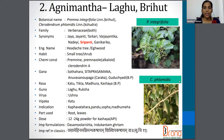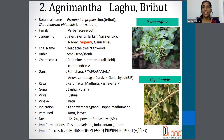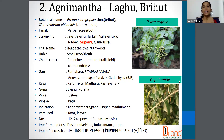The next drug is Agnimanda. Brihat Agnimanda botanical name is Premna integrifolia, and Laghu Agnimanda or Kshudra Agnimanda botanical name is Clerodendrum phlomidis. The family is Verbenaceae. Synonyms are Jaya, Jayanti, Tarkari, Vijayanti, Sriparni, etc. The English name is headache tree. The part used is roots and leaves, and the dosage is 12 to 24 gram powder for Kashaya.